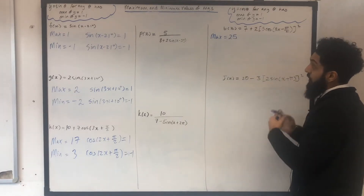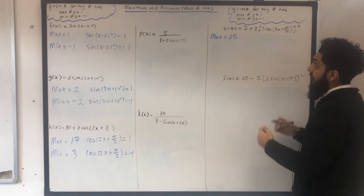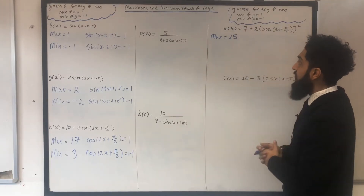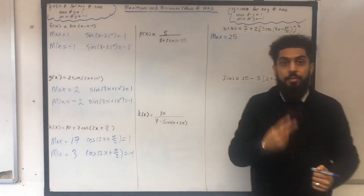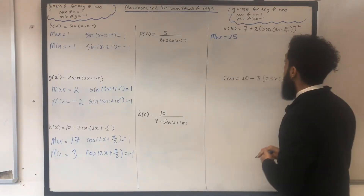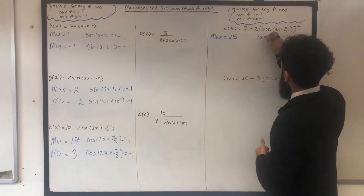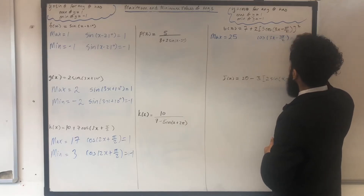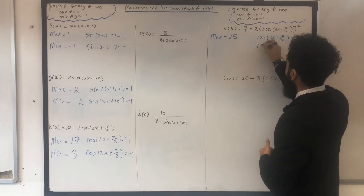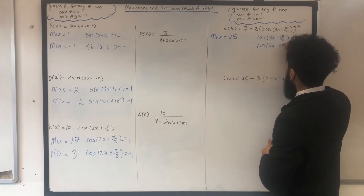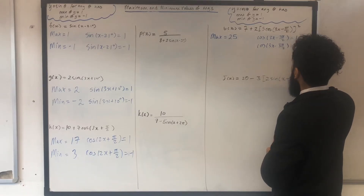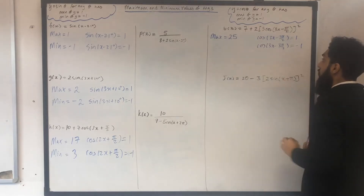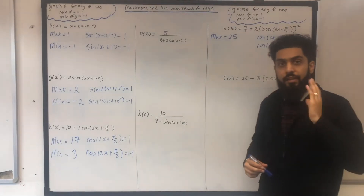In the exam, I could be asked to work out the smallest positive value of x for which the function t of x has a maximum of 25. This time I'm going to be solving two equations: cos in bracket 3x minus 3 pi over 2 equal to 1, and cos in bracket 3x minus 3 pi over 2 equal to minus 1. Once I solve these two equations, I take the smallest positive value of x.